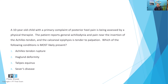This question is talking about a 10-year-old child — a pediatric case with the primary complaint of posterior heel pain. All of the options listed — Achilles tendon rupture, Haglund deformity, Talipes equinus, and Sever's disease — can result in retrocalcaneal pain. However, as we go through the question, we see more information that leads us toward the correct answer.